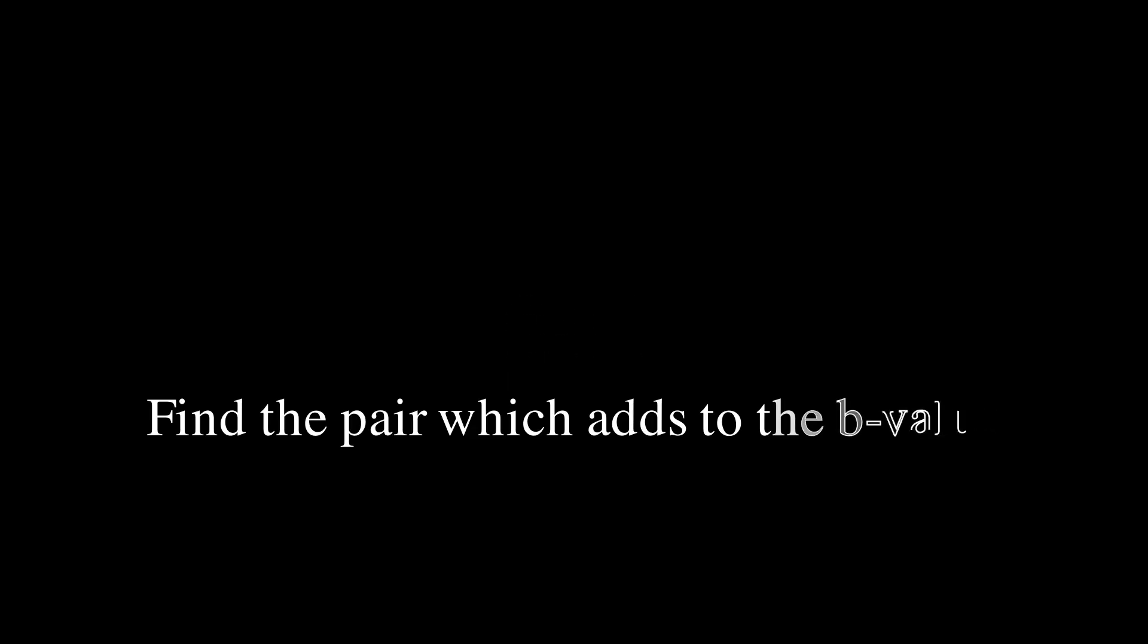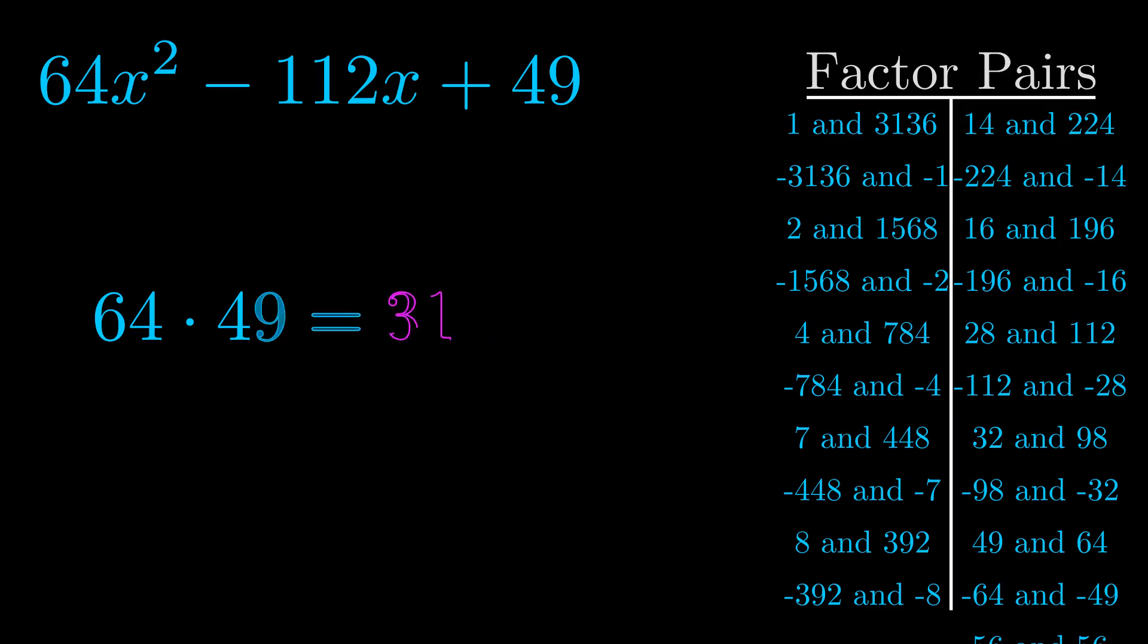The b value is the coefficient on the x term. That's the middle term, the one that we haven't done anything with yet.